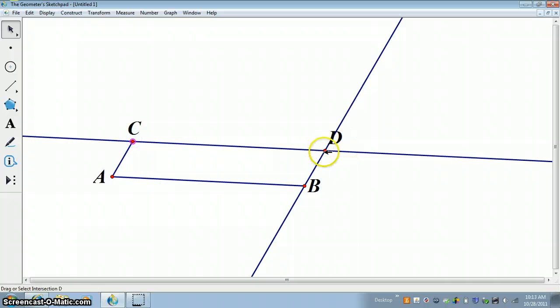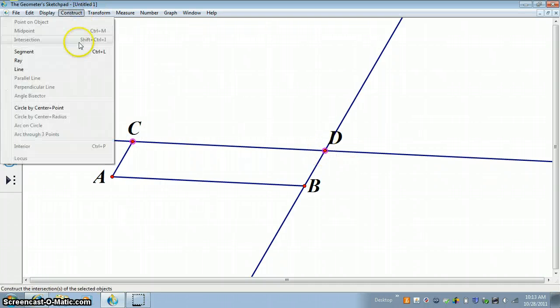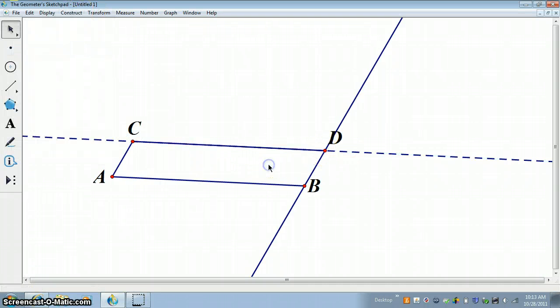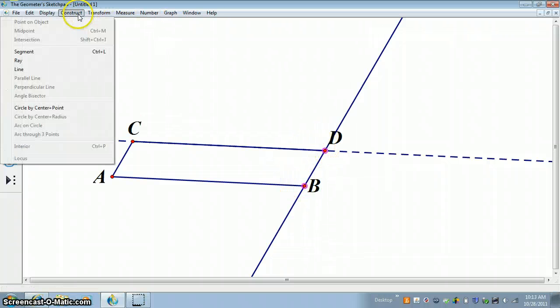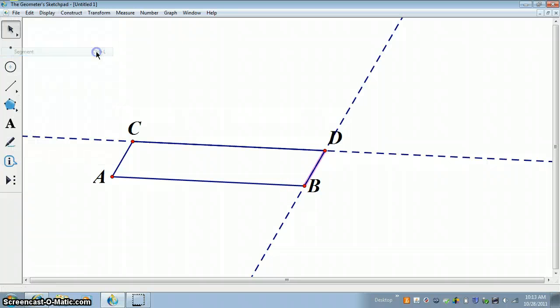I'm going to construct a segment from C to D, and I'm going to construct a segment from D to B, because we really want segments here and not lines. So I'll hide the lines. And we still have our parallelogram.